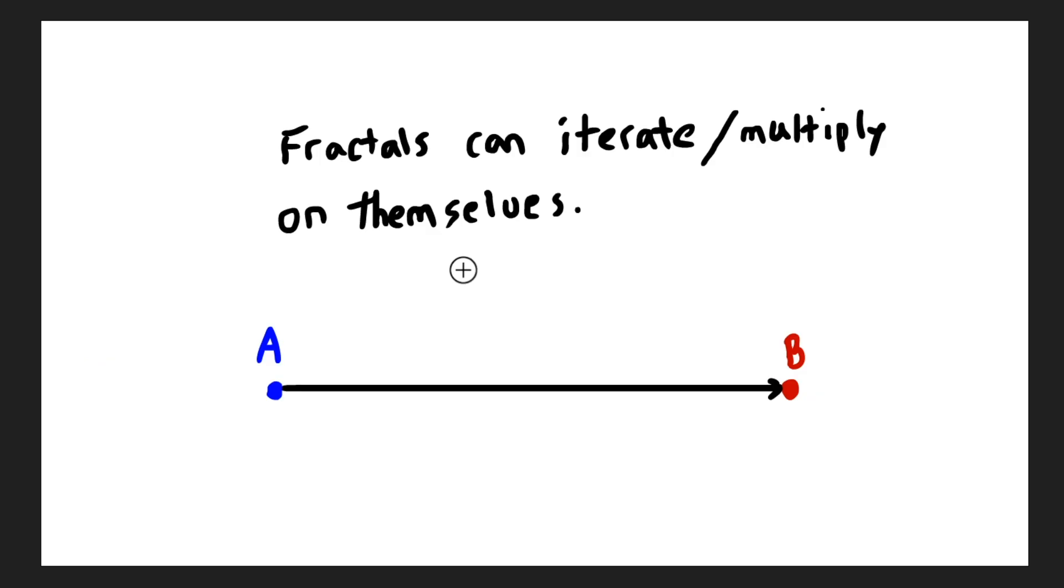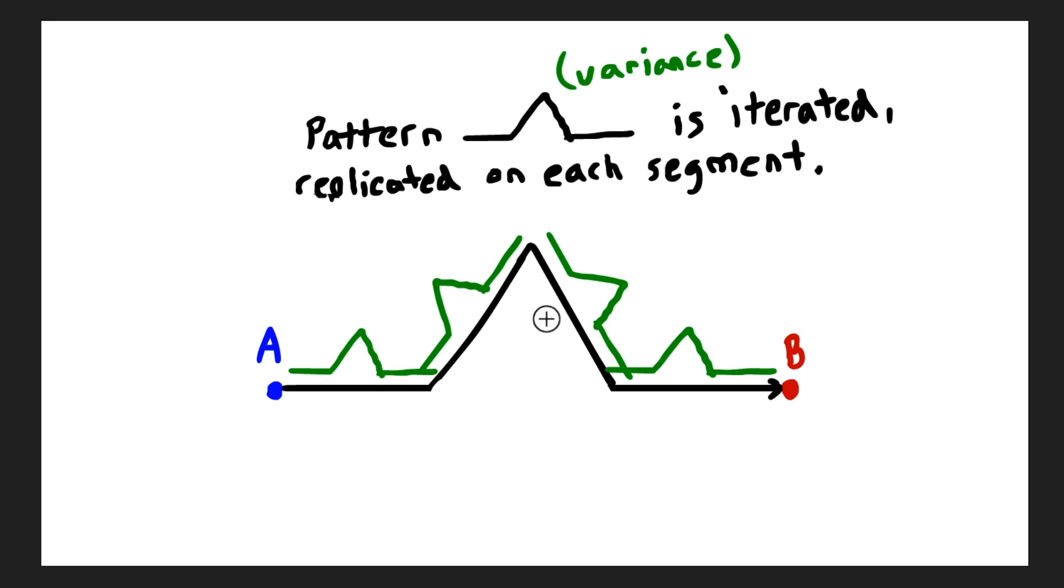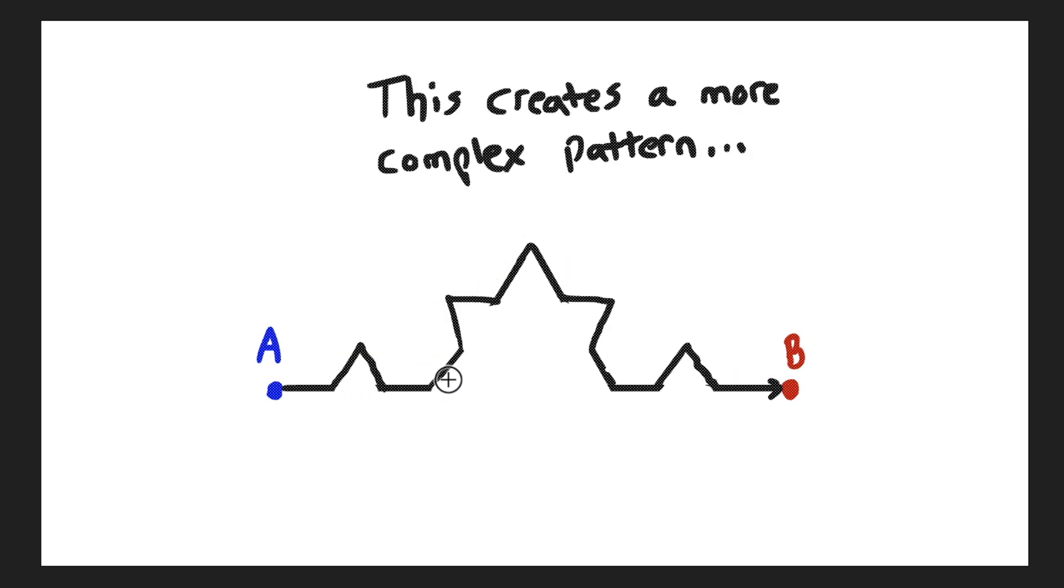Fractals also iterate and multiply on themselves. In the first example, we saw A to B just a straight line segment. If we introduce a pattern variance—you take A to B, then A to B goes up, then A to B goes down, then A to B goes back sideways—this pattern variance that's introduced can also be iterated on or replicated. When you say iterated, you're just talking about repeated over and over again as you progress through time. If you take each segment and iterate again using the new A to B, which is this motion, you get a more complex pattern.